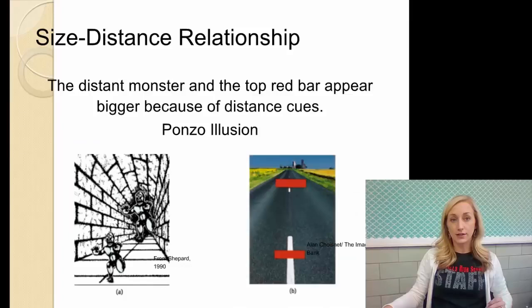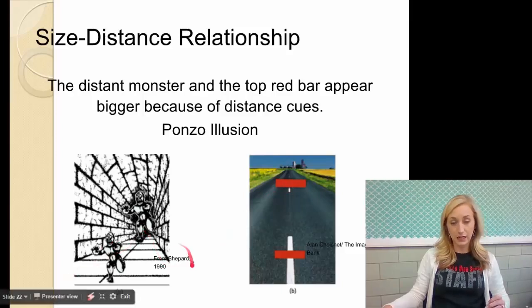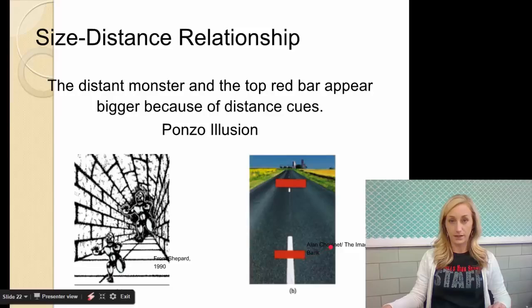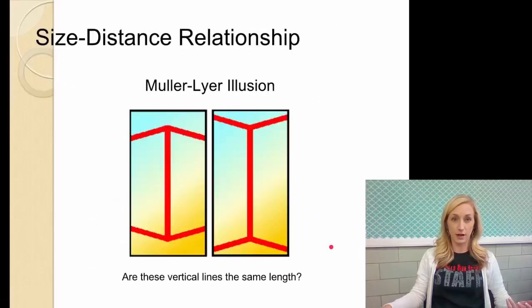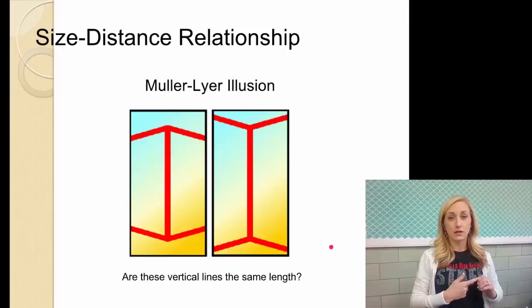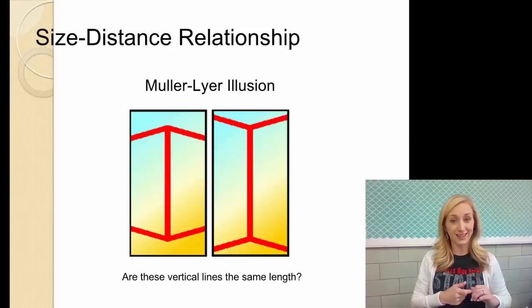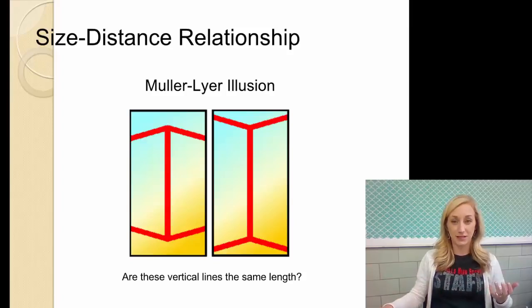So this is the Ponzo illusion. The distant monster at the top right here and the red bar up top, they appear to be bigger because of distance cues, because of linear perspective, size constancy, all of those, when actually this monster is the same size as this monster. Check it out. Use your fingers. And this red bar is the same size as this red bar. It's because of all these cues we've been talking about. Size distance relationship. This is the Mueller-Lyer illusion. Are these vertical lines the same length? Yes. Yes, they are. It's just we perceive them as different.